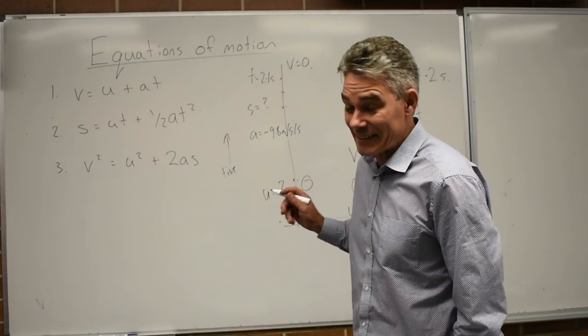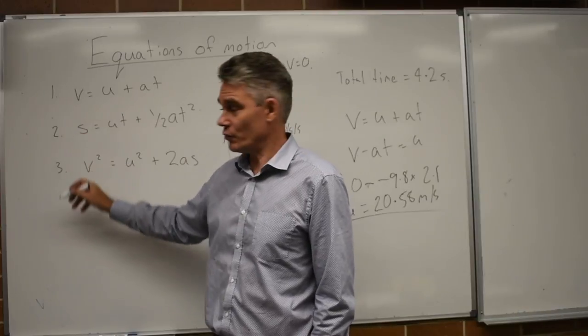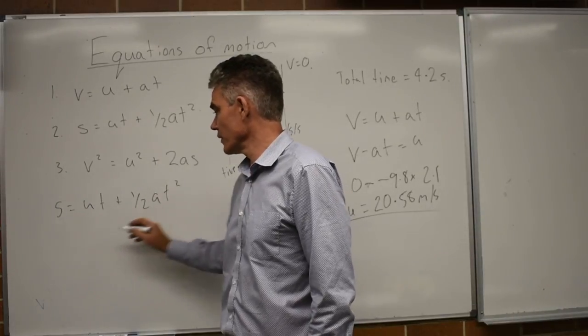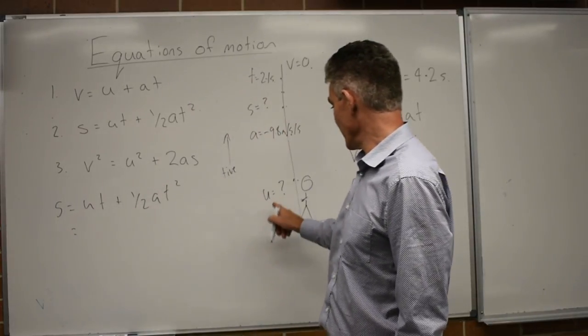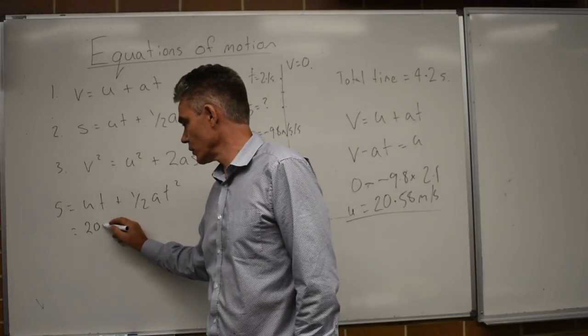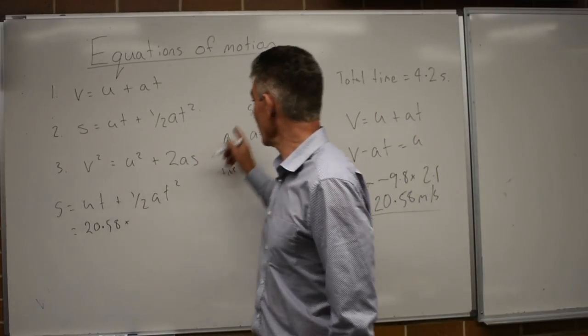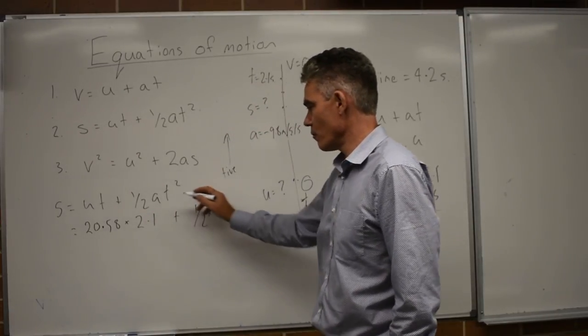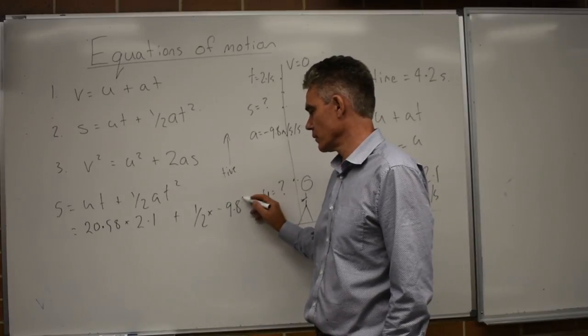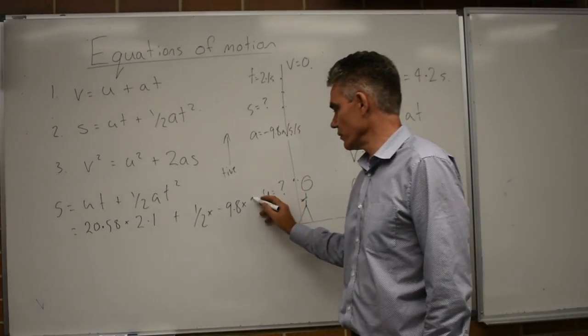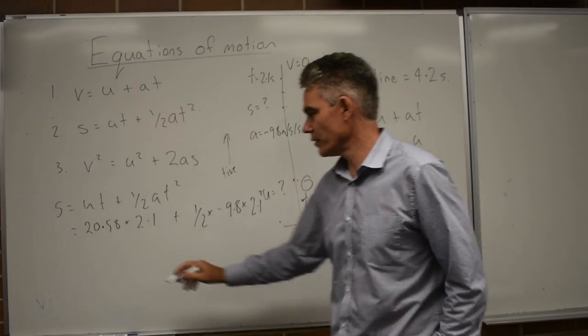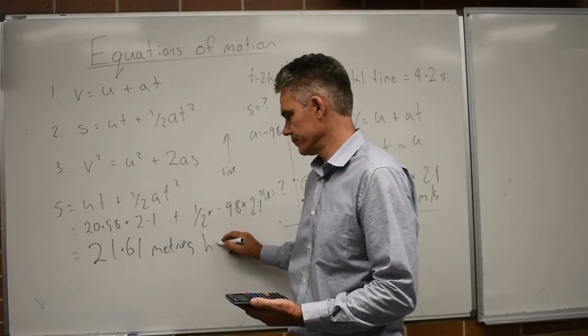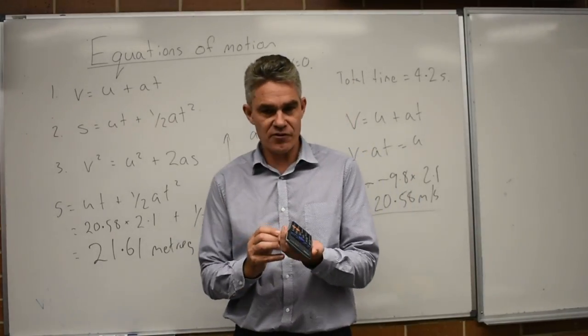And so if we now want to calculate how high it goes, let's go with number 2. S equals UT plus half AT squared. The initial velocity is up of 20.58 times the time, which is 2.1, plus half of minus 9.8 times T squared, 2.1 squared. 21.61 metres high. And that was the physics for Monday.